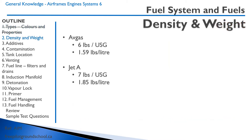Avgas weighs 6 pounds per U.S. gallon or 1.59 pounds per liter. Jet A is 7 pounds per U.S. gallon or 1.85 pounds per liter. These numbers will come up often when you're flight planning — you look at your fuel slip, figure out how much fuel you put in the airplane, then calculate how heavy you are for your weight and balance.